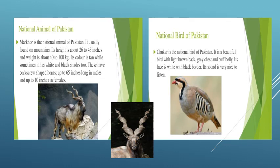Markhor is the national animal of Pakistan and is usually found on mountains. They have corkscrew-shaped horns which are up to 65 inches long in males and up to 10 inches in females. The national bird of Pakistan is the Chakor partridge. It is a beautiful bird with a light brown back, gray chest, and buff belly. Its face is white with a black border.